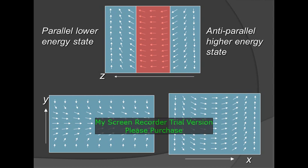This shows the spatial encoding by gradient fields. The spins tend to align in the direction in which the gradient is switched on.